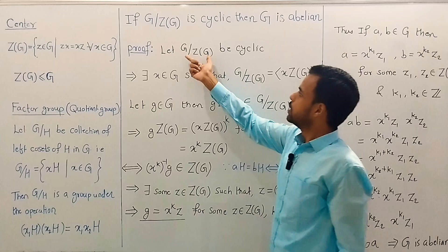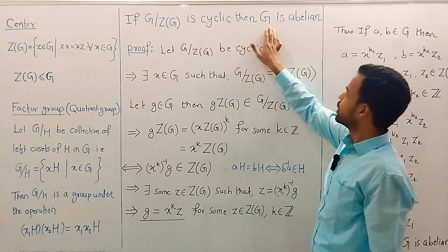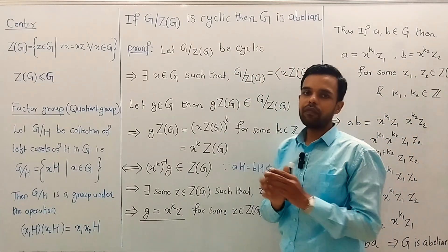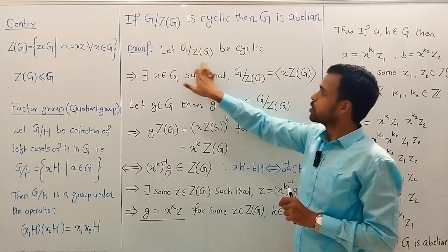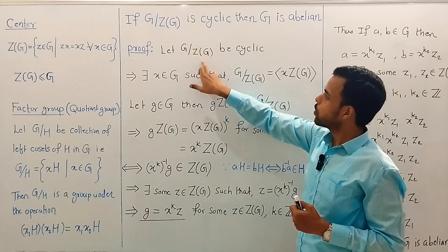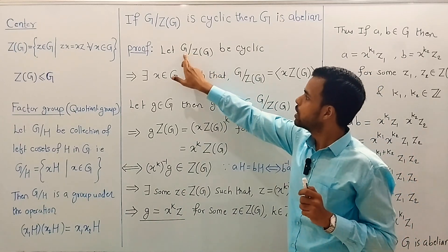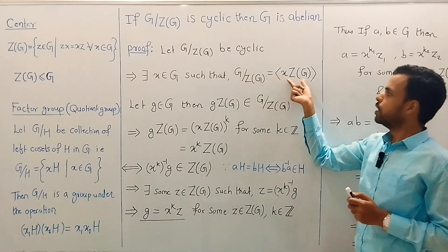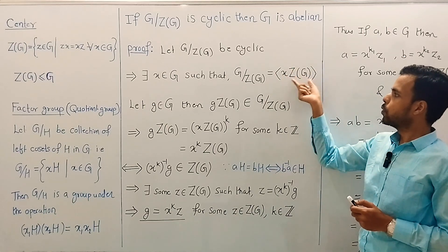Assume that the quotient group G by Z(G) is cyclic. Our aim is to show that G is abelian. Since this group is cyclic, by definition of a cyclic group it must be generated by one of its elements. The elements of this quotient group are cosets — specifically left cosets of Z(G) in G. So there must be some left coset of Z(G) in G which generates the whole group.